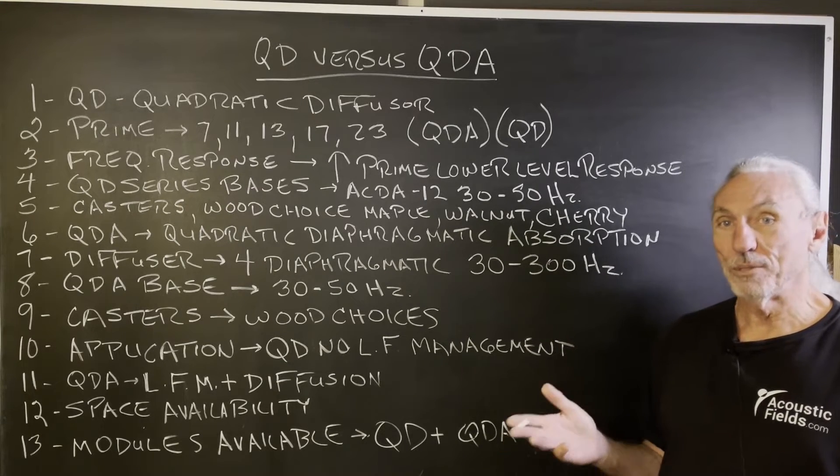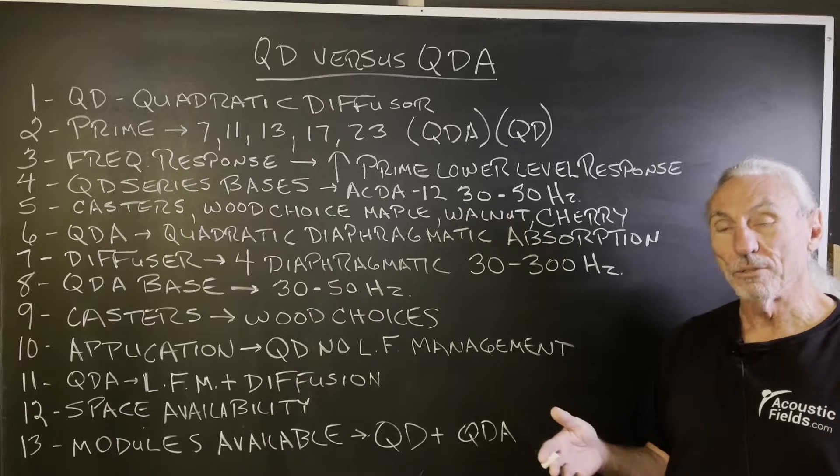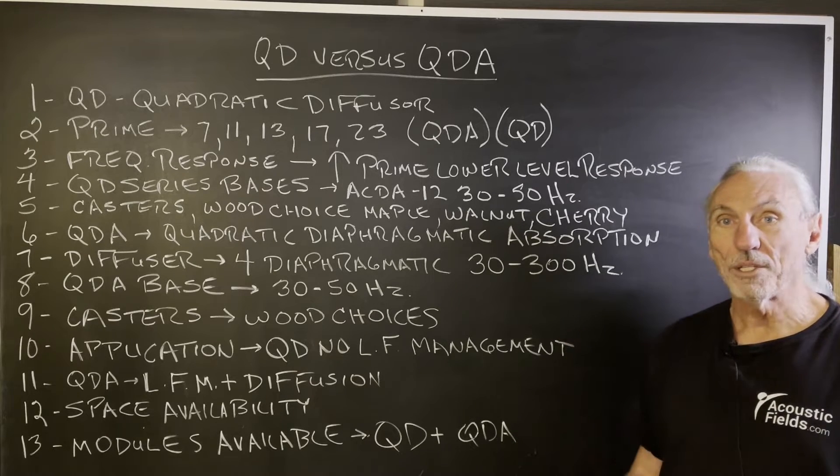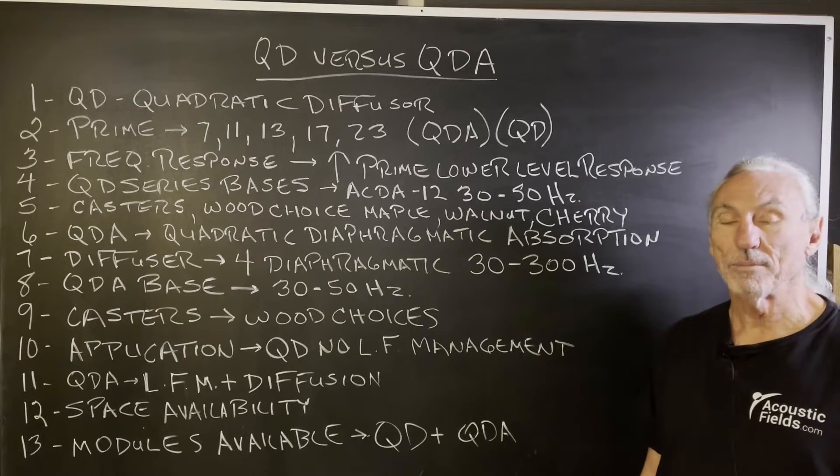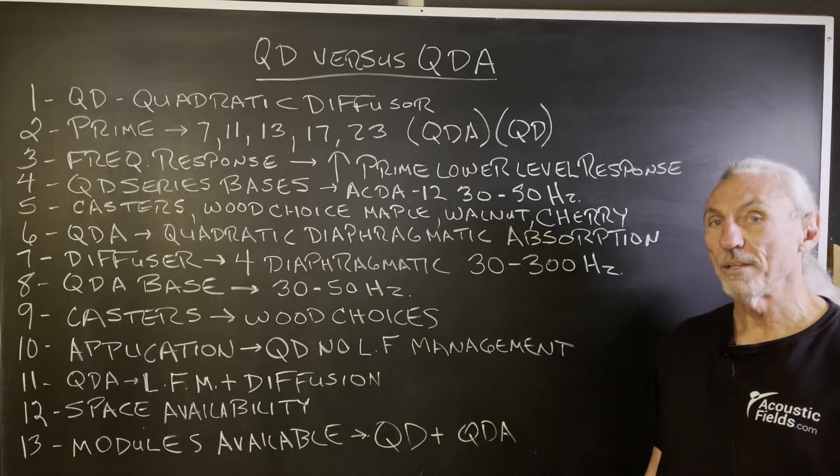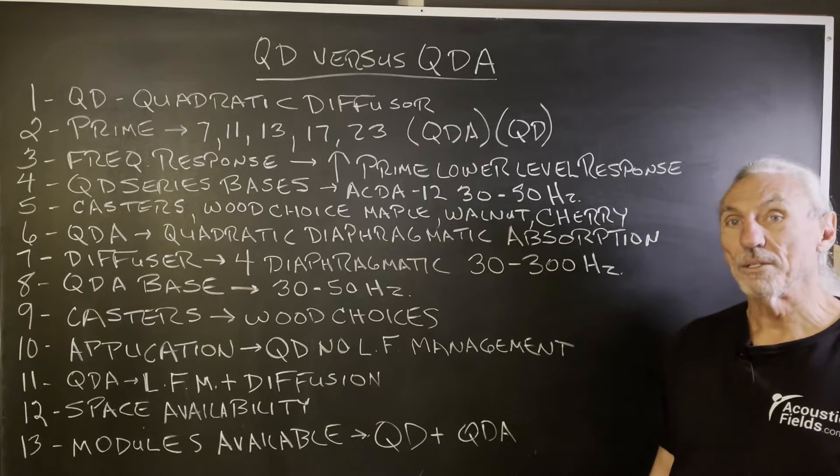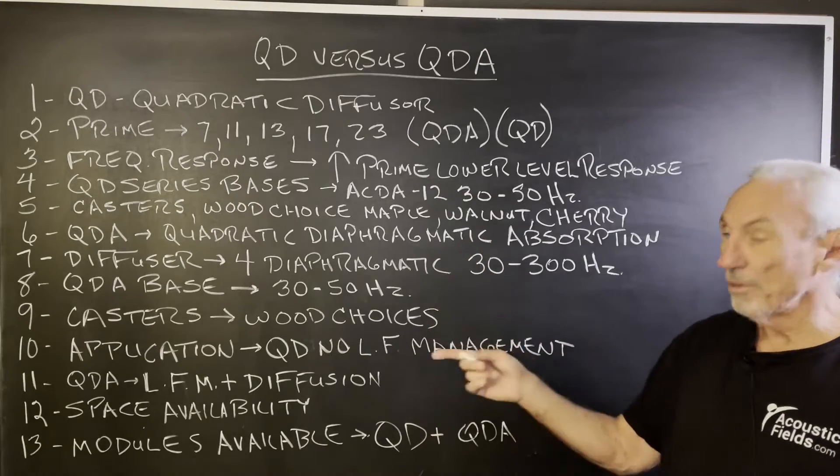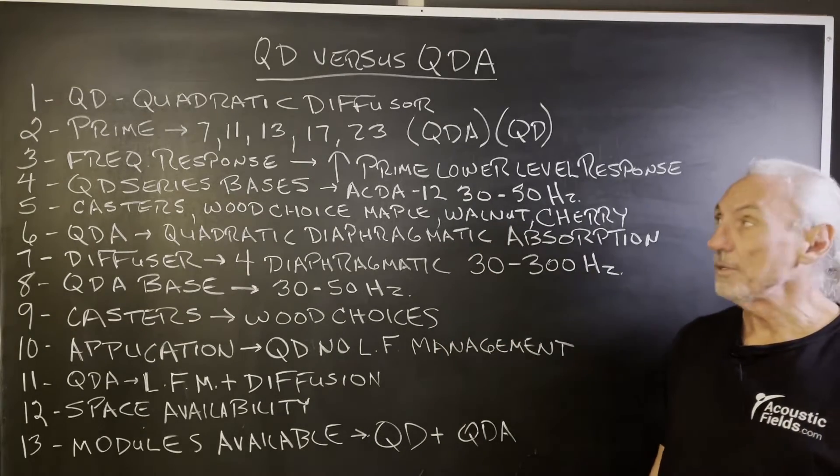Most of the product's descriptions are available on the website, so if you want to understand the product, just read the text on each product on the website. Most of the information you'll need to make a decision is there. But let's go over some of the highlights of both the QD and the QDA.